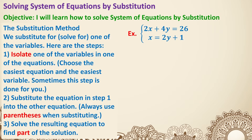We substitute or solve for one of the variables. Here are the steps. First, isolate one of the variables in one of the equations — choose the easiest equation and the easiest variable. Sometimes this step is done for you. Looking at the right side, x is already by itself, so the first step is already done. Step 2: substitute the equation from step 1 into the other equation. Always use parentheses when substituting. Substitute means replace — you make something completely disappear and it's replaced by something else.